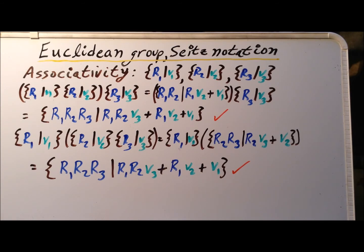Since the Euclidean group has an identity, an inverse for each element, the closure property, and associativity, we can declare that the set of Euclidean transformations forms a group. Thank you very much for your attention.